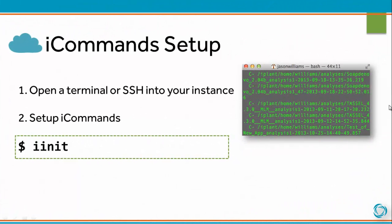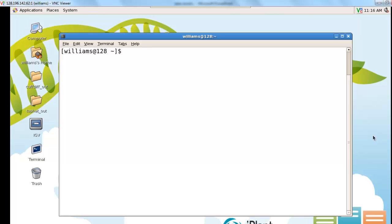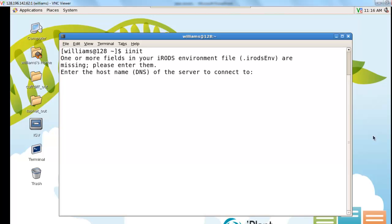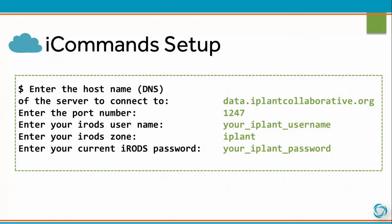To use iCommands in your Atmosphere instance, open a terminal, or SSH into your instance. In order to complete the setup, you'll need to enter the following. For the host name of the server to connect to, use data.iPlantCollaborative.org.